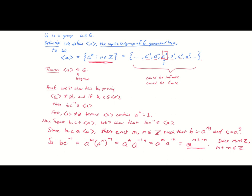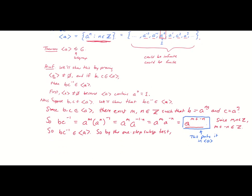And because we know that and because we know that BC inverse can be written in this form, A to an integer, this makes this element in that set that we defined above because that's what it means to be in angle brackets A. So we know BC inverse belongs also to angle brackets A. And so by the one-step subgroup test, this is indeed a subgroup.